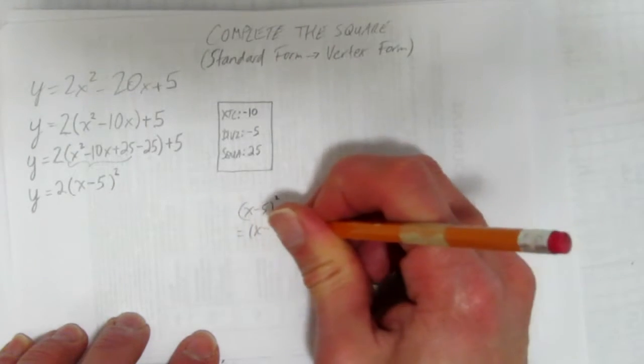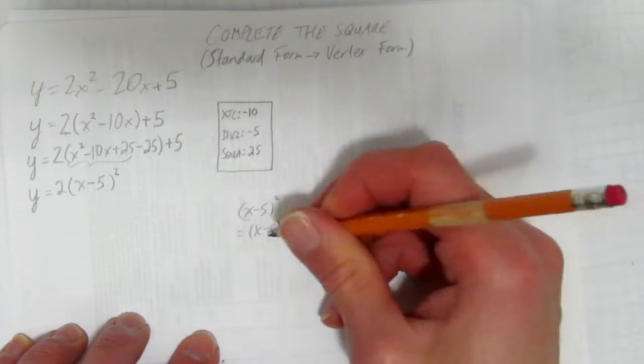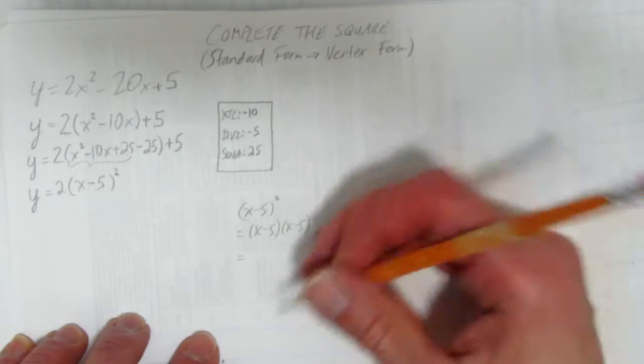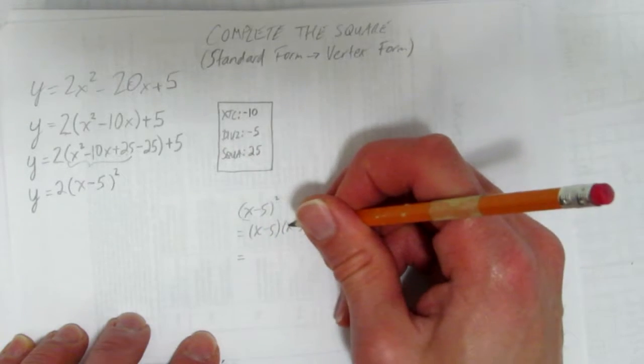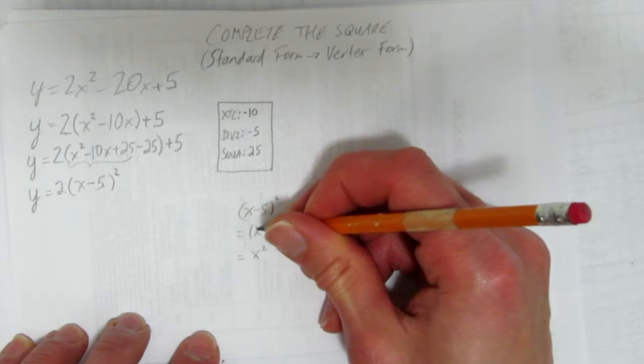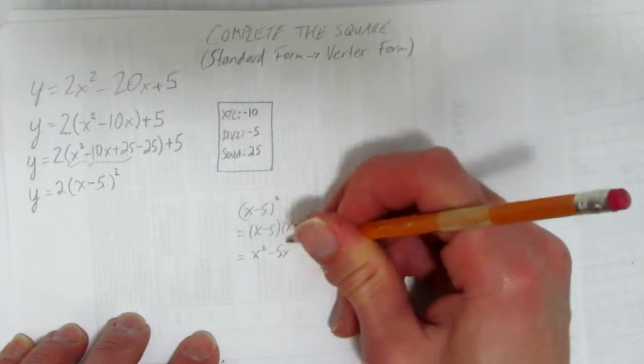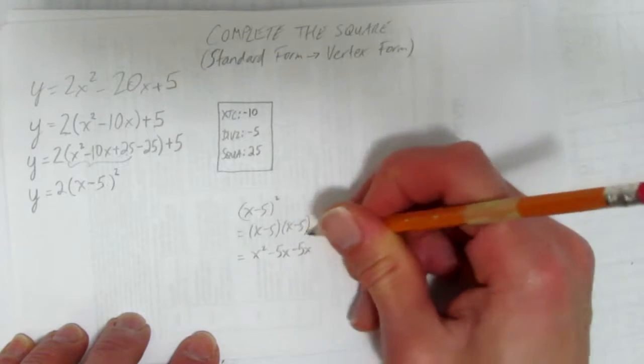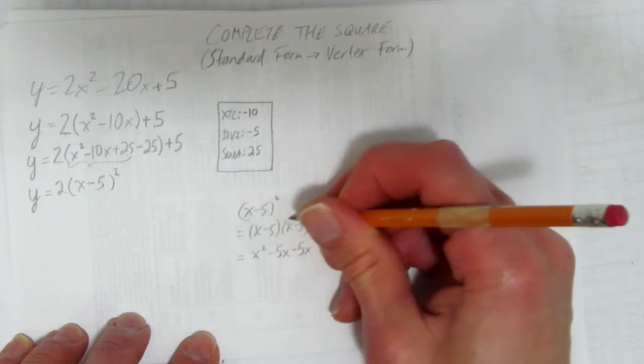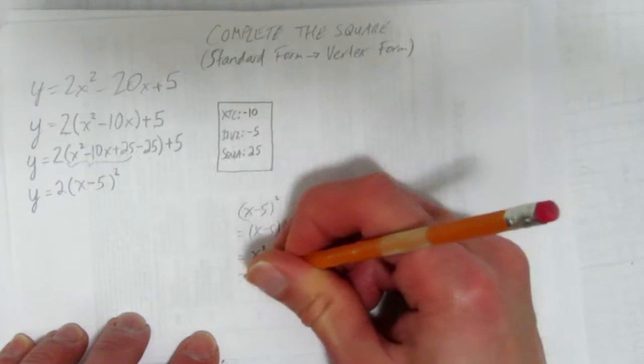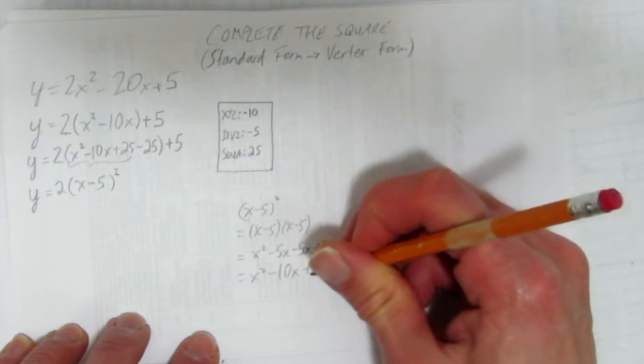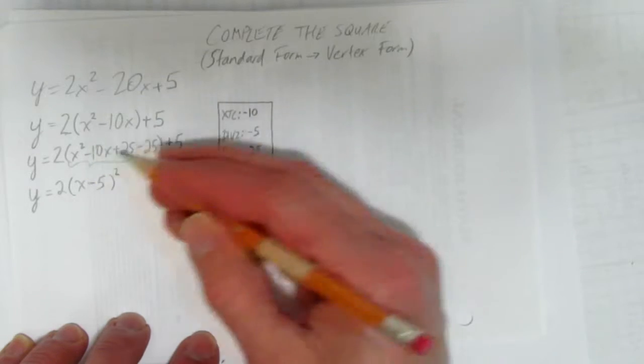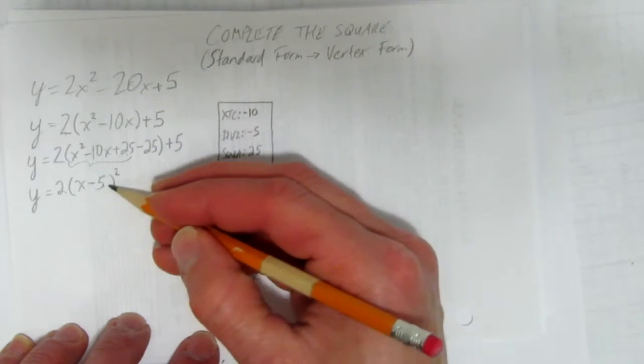That's the same as x minus 5 times x minus 5. You should watch the video here on how to FOIL or how to EXPAND, but I'll show you really quick. It's first times first, x times x, that's x squared. Then it's outside times outside, that's minus 5x. Then it's inside times inside, another minus 5x. And lastly, the L is minus 5 times minus 5 plus 25. But look, it's x squared minus 10x plus 25. Do you see how this is this? That is x squared minus 10x plus 25 is x minus 5 squared.